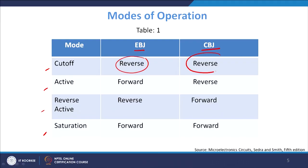The first mode is cut-off: if both EBJ and CBJ are reverse biased, the emitter-base depletion width is large and the collector-base depletion width is also large. There is no probability of electrons from the emitter entering the base. Therefore there will be almost zero current — we define this as the cut-off mode. Why cut-off? Because you are applying a bias but you are not getting any output current.